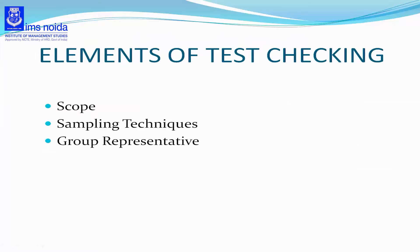Coming to some of the elements of test checking, there are three basic elements. The first one is scope — test checking decides the scope of audit work. If frauds and errors come to light during test checking, the scope of checking may be widened and a comprehensive examination may also be undertaken. If the auditor finds a lot of frauds and errors in the samples collected, he will widen his scope and include more transactions.